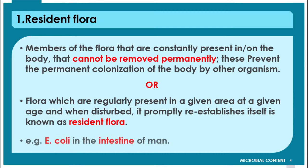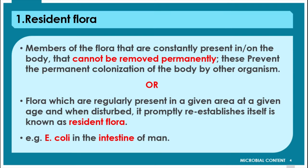The best example of resident flora is E. coli in the intestine, which is normally present in the intestine of both humans and animals. That is the best example of normal flora of the intestine.